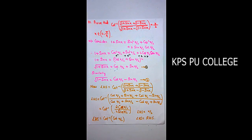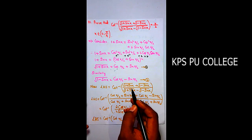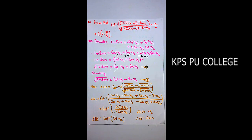Similarly, √(1-sinx) = cos(x/2) - sin(x/2). Now consider the LHS: cot⁻¹[(√(1+sinx) + √(1-sinx)) / (√(1+sinx) - √(1-sinx))]. Substituting: numerator = (cos(x/2) + sin(x/2)) + (cos(x/2) - sin(x/2)) and denominator = (cos(x/2) + sin(x/2)) - (cos(x/2) - sin(x/2)).